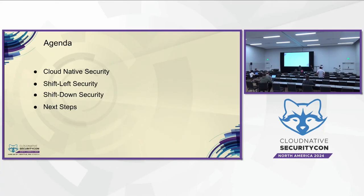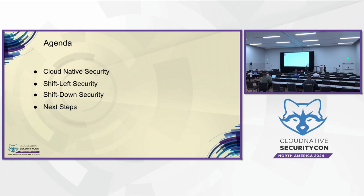Today we are going to cover cloud-native security. We're going to compare traditional security with cloud-native security, talk about shift left and why you need it, then go into shift down security with three examples: vulnerabilities, misconfiguration, and supply chain security. We'll also talk about next steps, share some reading material, and cover some takeaways.